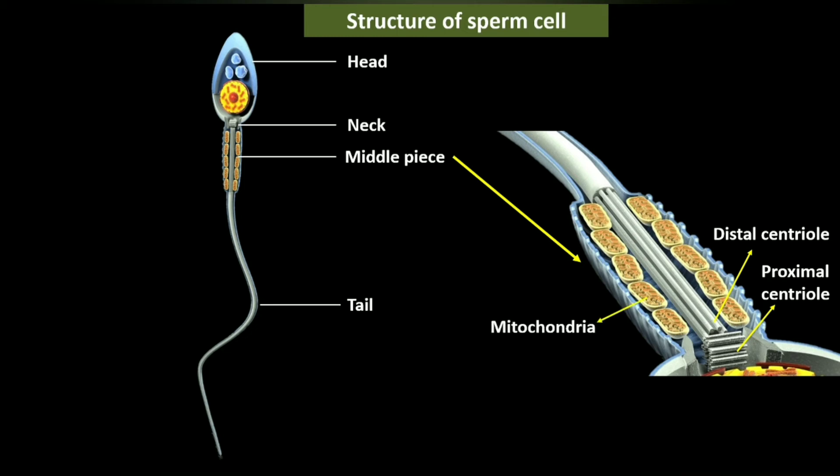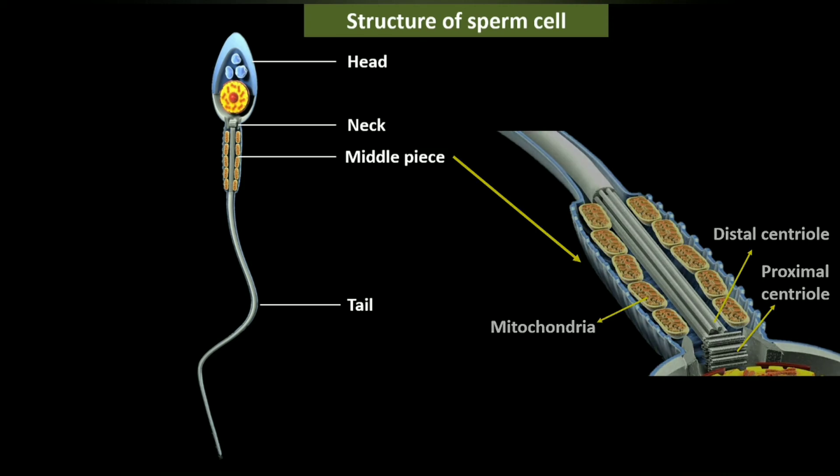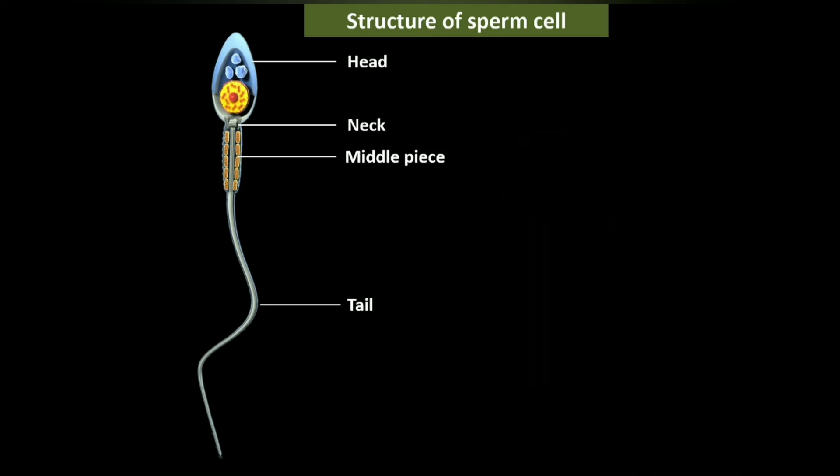Behind the neck, the middle piece is formed when the mitochondria of the sperm cell align as a helix or spiral around the first part of the tail. It supplies energy to the sperm. The spiral arrangement of the mitochondria is called the nebenkern.